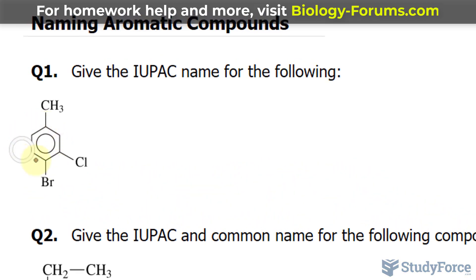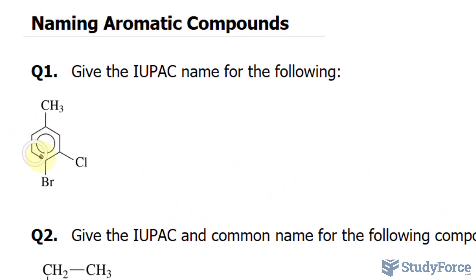So while you see a hexagon here, 1, 2, 3, 4, 5, 6, and inside a circle, what's really happening is you have this cyclohexane and you have these double bonds around it. And instead of these double bonds, we just draw a circle.